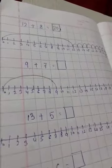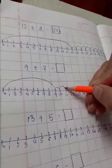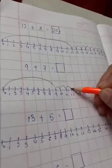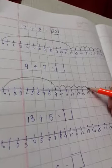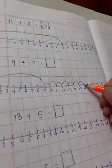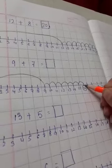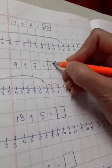So we will count the jumps, 7 jumps: 1, 2, 3, 4, 5, 6, 7. Ok, so this is number 16. We have circled it and we will write it in the box, 16.